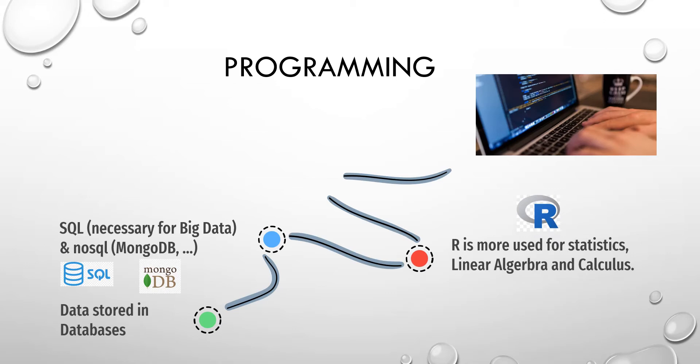Then we have R. R is more used for statistics, linear algebra, and calculus. For example, it has packages such as Pragma and Matlib that make working with matrices very easy and also working with calculus, for example to create functions for linear regression.